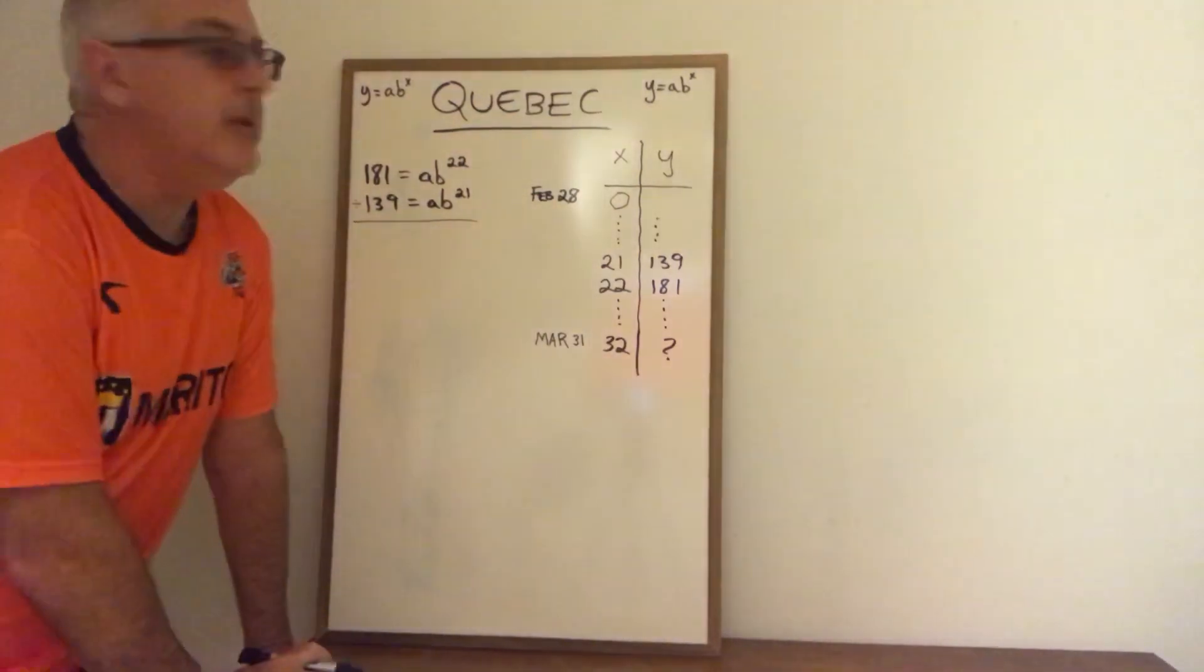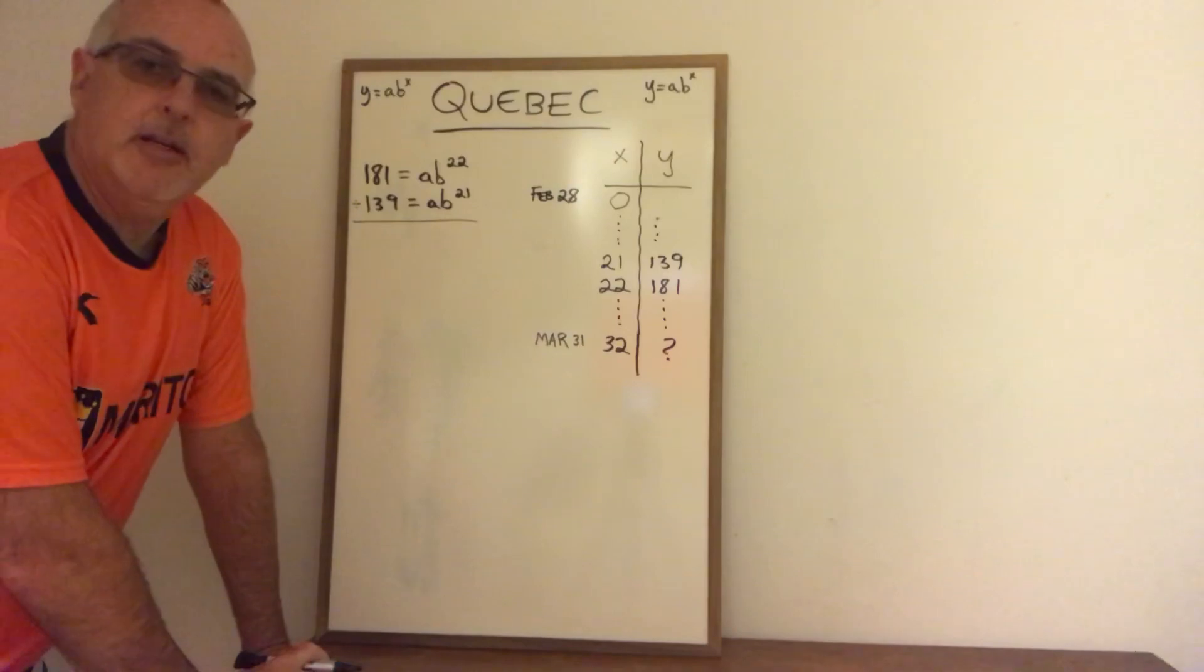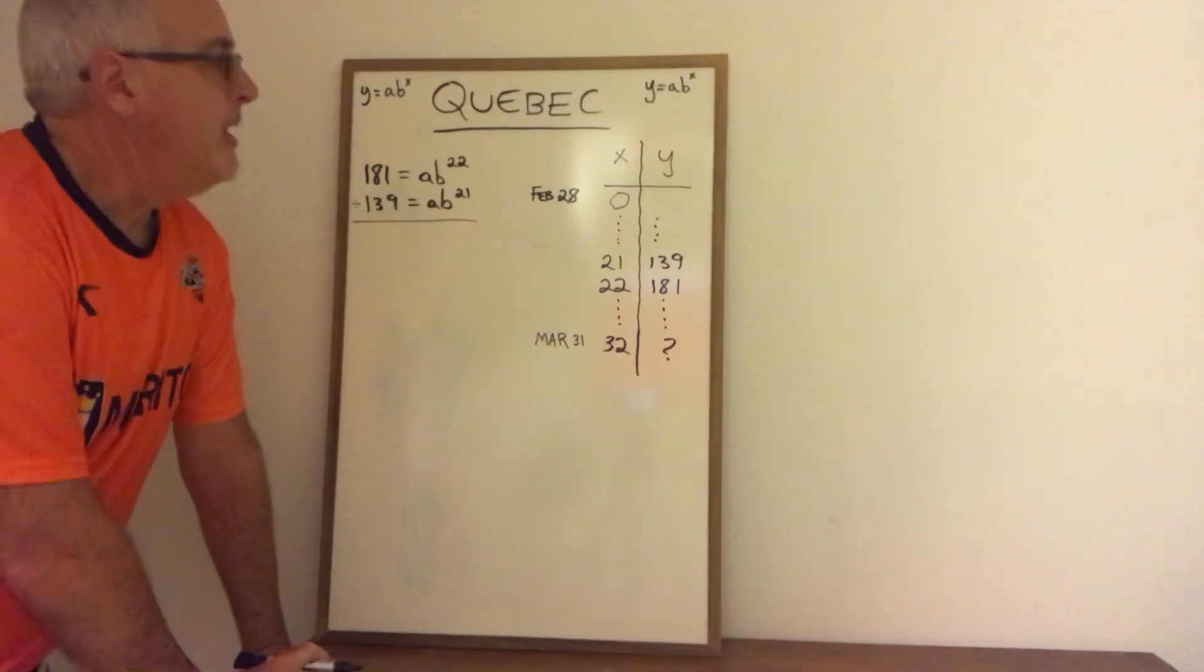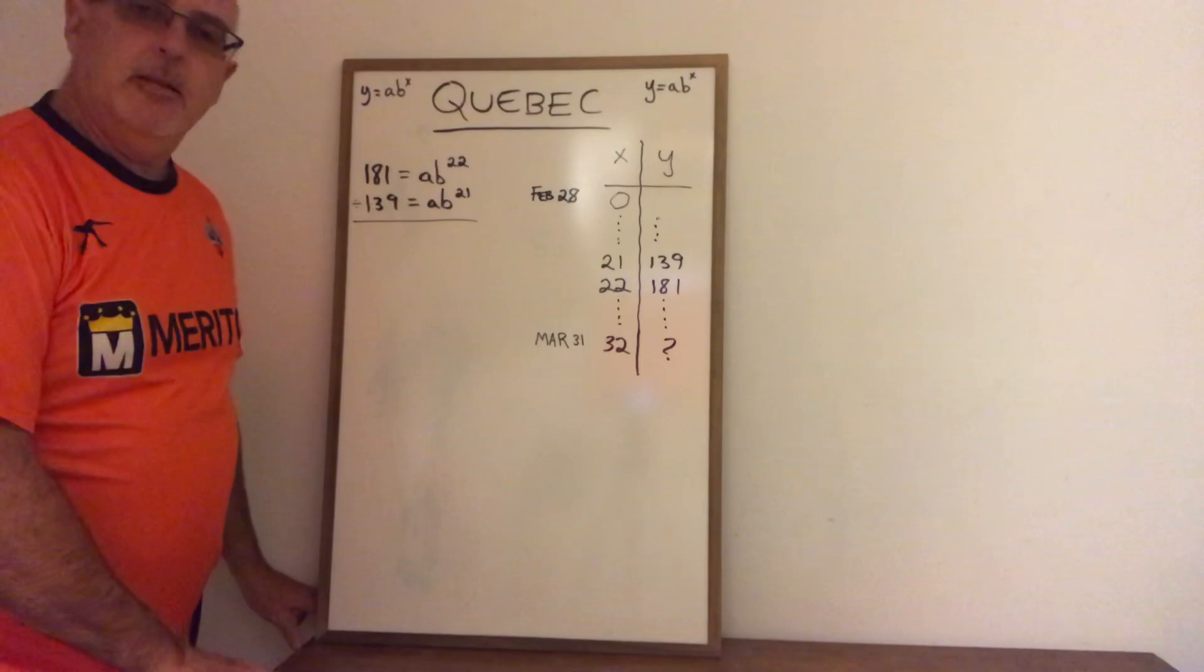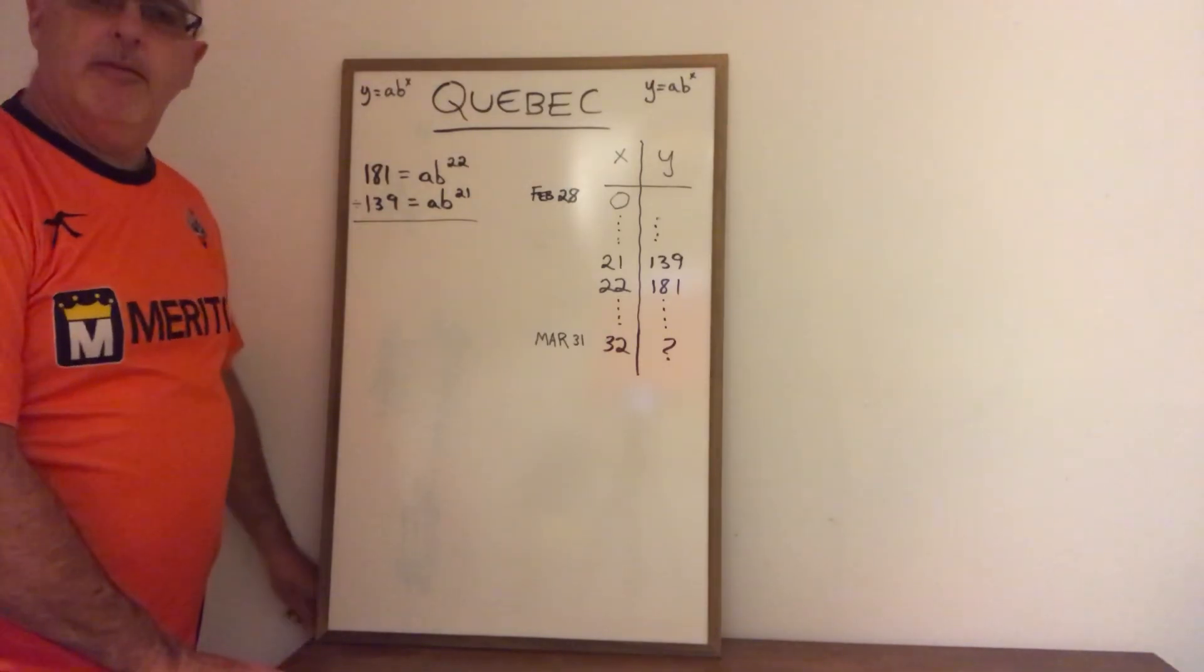Today's Daily Dose of Math is building an algebraic model for an exponential equation. The example I'm using is the spread of confirmed cases in the province of Quebec of the coronavirus.